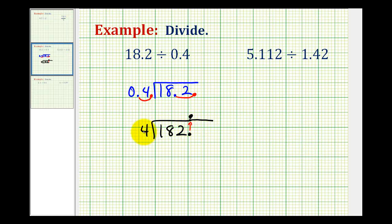We first want to determine how many fours there are in 18. That would be 4. 4 times 4 is 16. We subtract. That would be 2. Bring down the next digit.